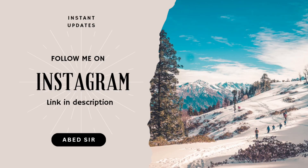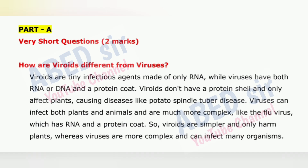First important question: How are viroids different from viruses? Viroids are tiny infectious agents made of only RNA, while viruses have both RNA or DNA and a protein coat. Viroids don't have a protein shell and only affect plants, causing diseases like potato spindle tuber disease. Viruses can infect both plants and animals and are much more complex, like the flu virus, which has RNA and a protein coat.